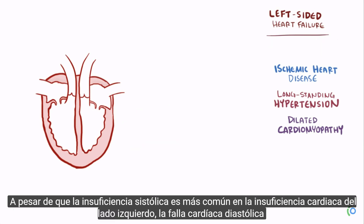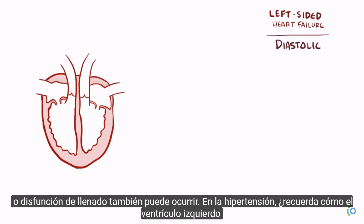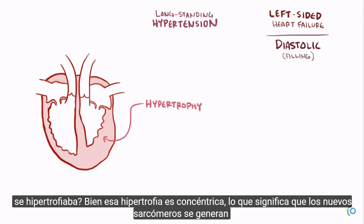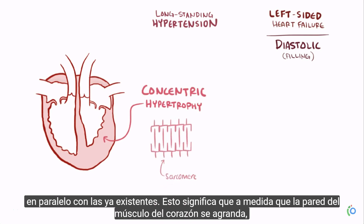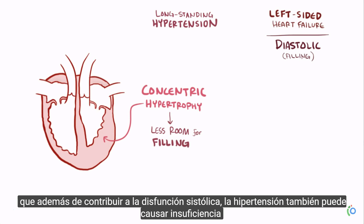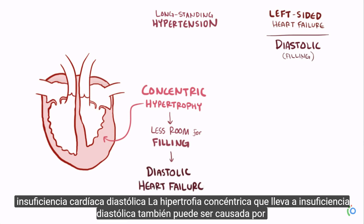Even though systolic failure is most common in left-sided heart failure, diastolic heart failure, or filling dysfunction, can also happen. In hypertension, the left ventricle hypertrophies concentrically, meaning new sarcomeres are generated in parallel with existing ones. As the heart muscle wall enlarges, it crowds into the ventricular chamber space, resulting in less room for blood, so in addition to contributing to systolic dysfunction, hypertension can also cause diastolic heart failure.